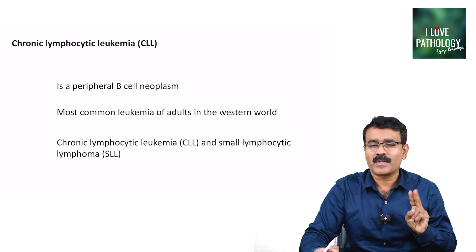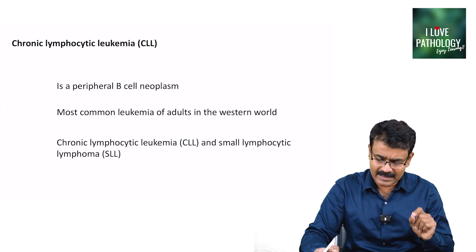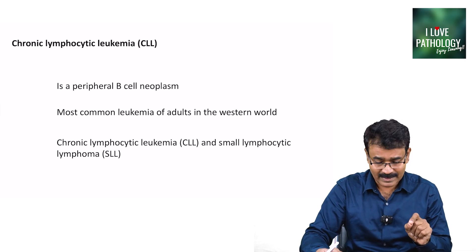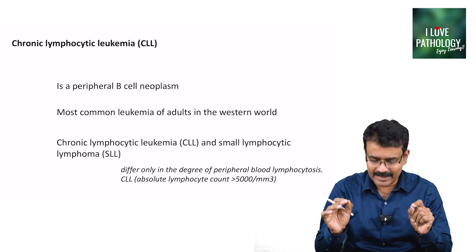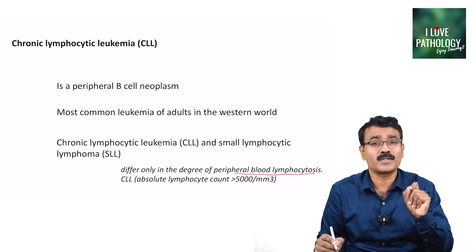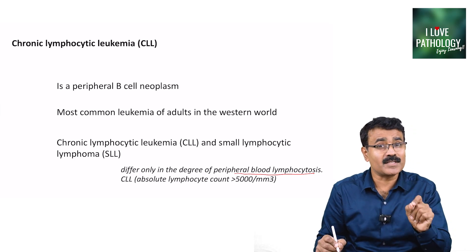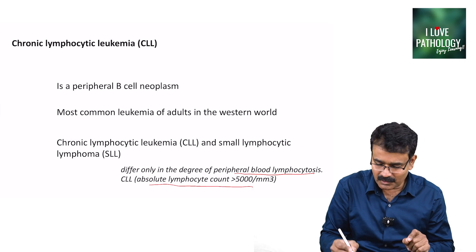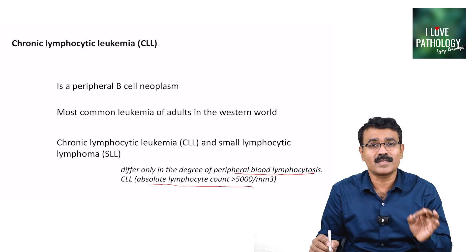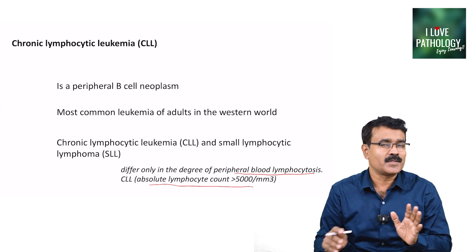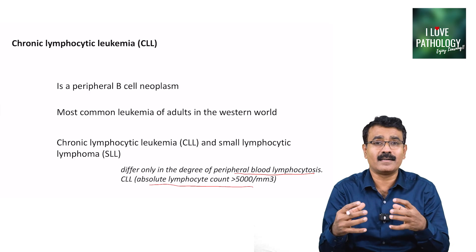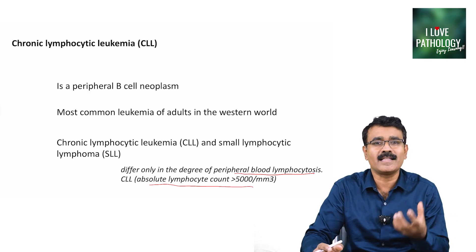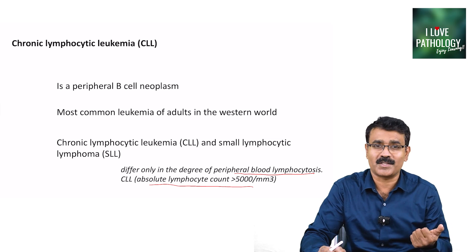There are two terminologies: chronic lymphocytic leukemia and small lymphocytic lymphoma. Are these two the same? They differ only in the degree of peripheral blood lymphocytosis. In CLL, the absolute lymphocyte count is more than 5,000 per mm³. SLL is a neoplasm of the lymph nodes — a non-Hodgkin lymphoma where you don't see that peripheral blood absolute lymphocytosis.